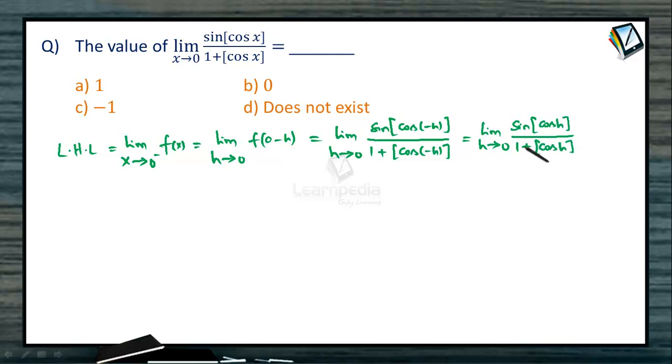Now observe the value of cos h as h tends to 0. Since h is positive, it's an angle in the first quadrant where cos h lies between 0 and 1. Therefore, [cos h] = 0.